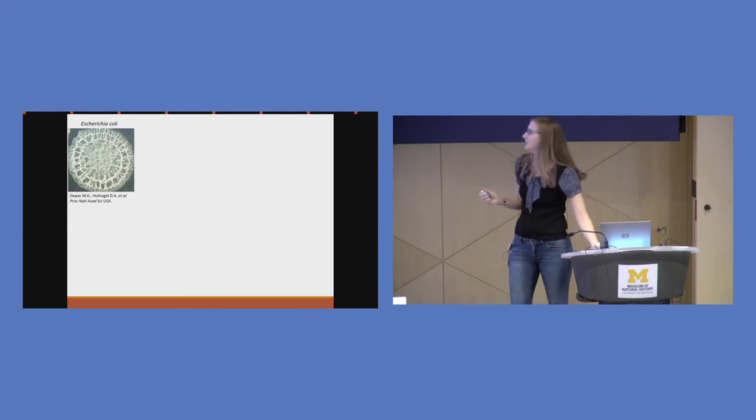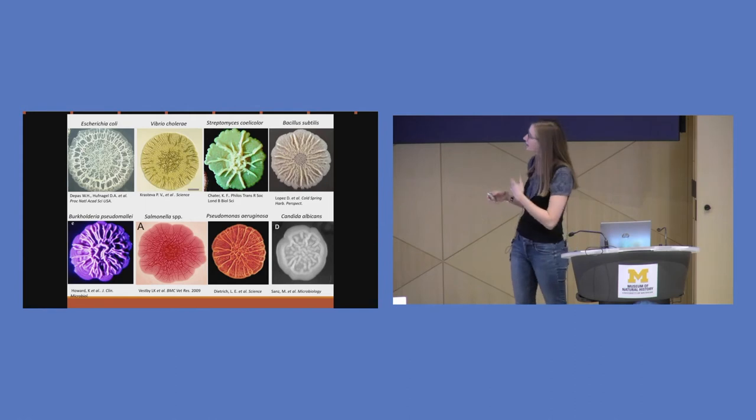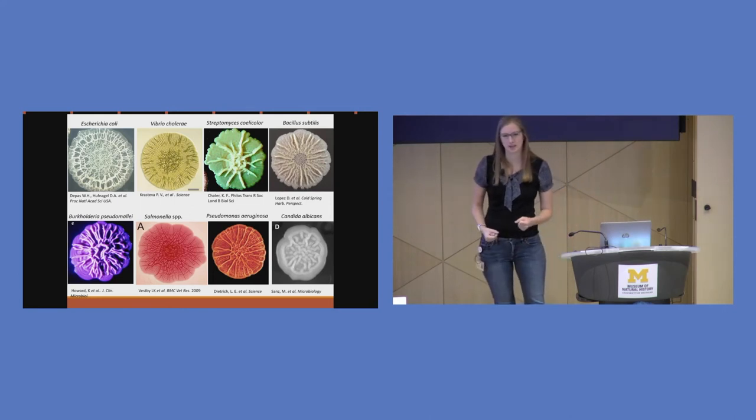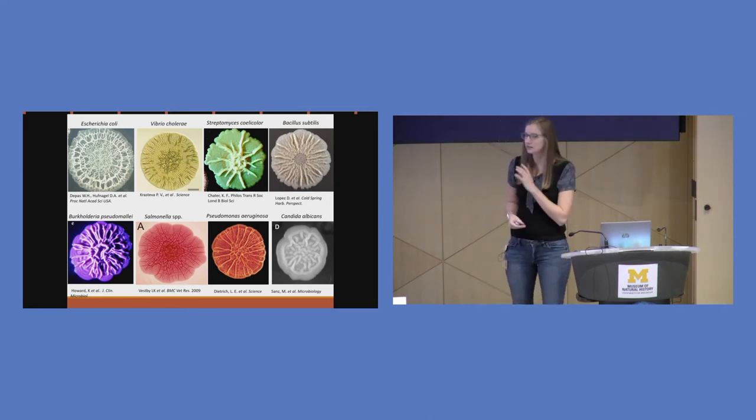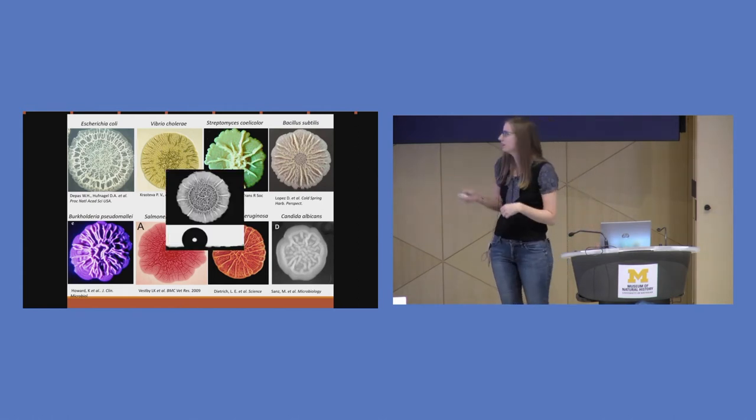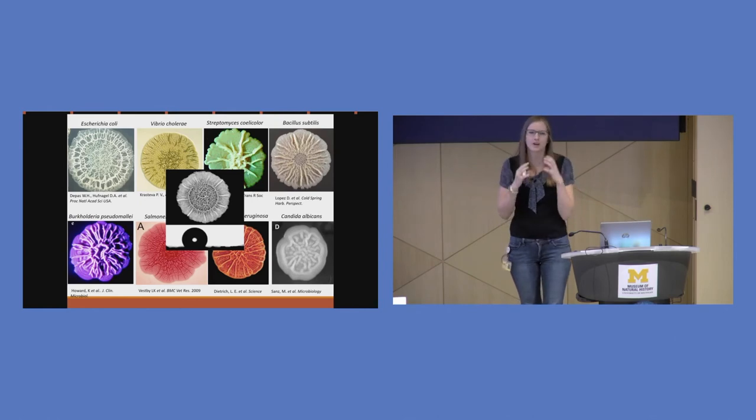But the problem is it's not just E. coli. It's pretty much everything. Here we have some examples. This is a yeast. This is some bacteria that live in the dirt. This is why you shouldn't eat raw chicken. And they all make the same shape. So it's really important to these bacteria for their protection and their survival. In fact, the protection is so good if you put a drop of water or antibiotic, this is a side view, right on top of the biofilm, it wouldn't soak in. It doesn't even distort the water drop. That's how well these bacteria are protected from their environment.